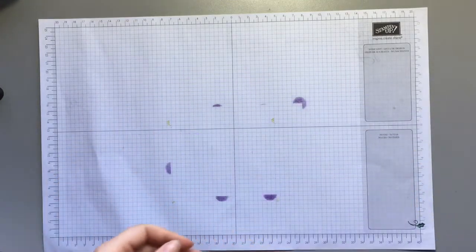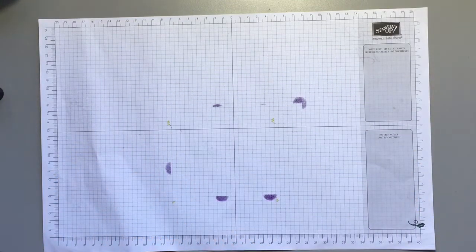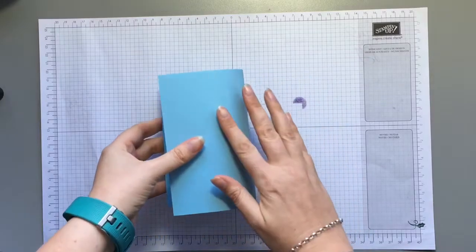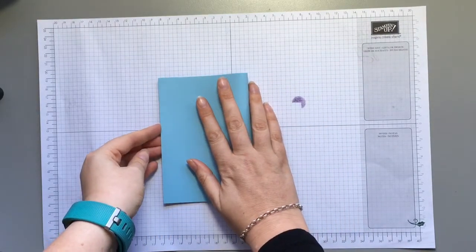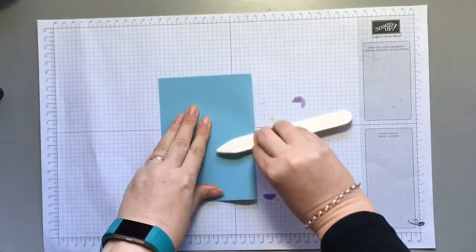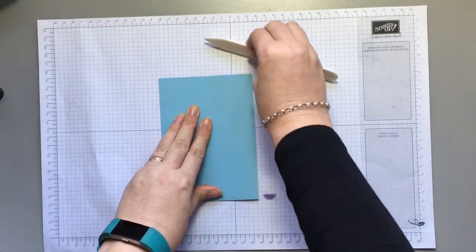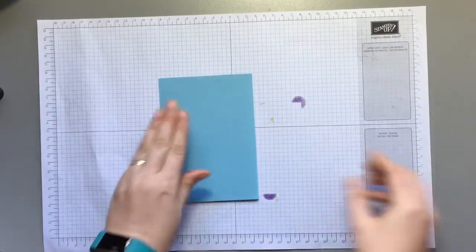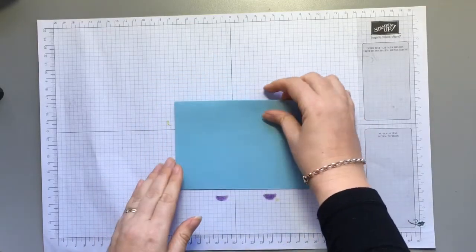This time I'm going to use a half an A4 sheet of cardstock in Balmy Blue and you just simply fold that in half and that's just a standard size card.